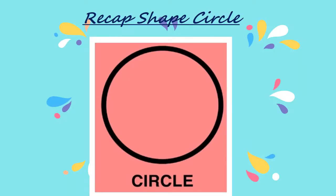Now children, did you recognize this shape? This is the circle shape. The circle shape is a shape which is round. For example, a bottle cap, a bangle, a plate, a round cookie, or a tile. These all are round in shape and are called circle shapes.